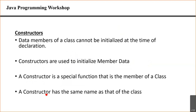A class consists of variables and functions. One of the special functions in a class is called the constructor. A constructor is a function which has the same name as the class name. The benefit of having a constructor is that when you create an object of your class, the constructor is automatically executed. We'll clarify this very soon with a coding example.